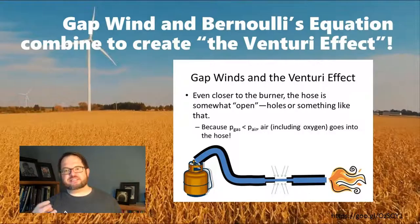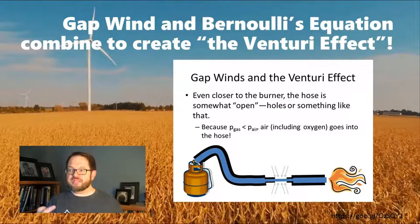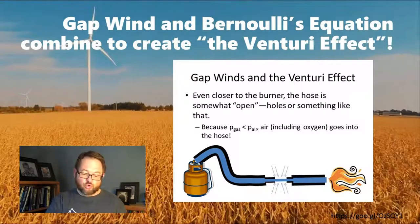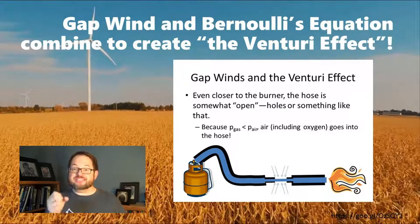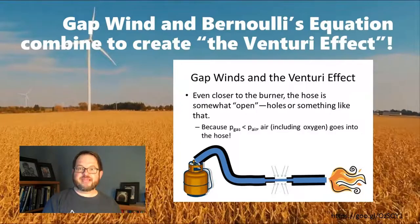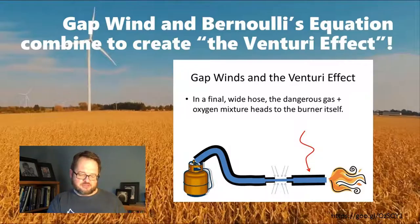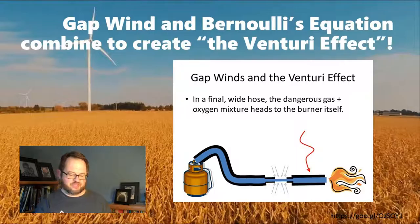That's where the oxygen is coming from. Air is getting sucked into that leaky part of the hose because the pressure inside that hose is lower than the pressure outside. See how we've taken the gap wind effect and combined it with the Bernoulli equation to create this little apparatus here that safely mixes oxygen with a ridiculously flammable gas like propane? So oxygen comes in through those leaky parts of the hose, then the hose turns back into a solid hose or whatever. They widen the hose back out again to slow the flow down, and then they ignite the mixture of oxygen and propane to create the flame.